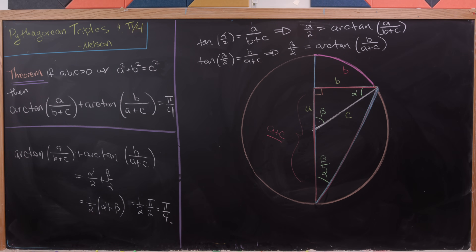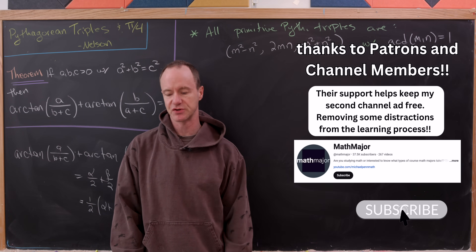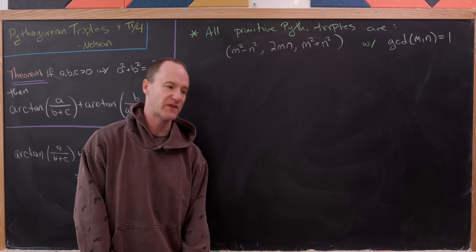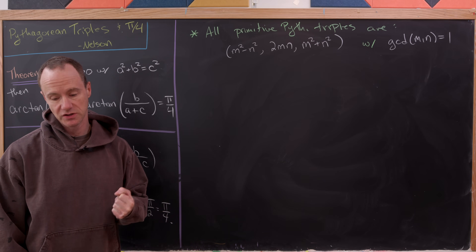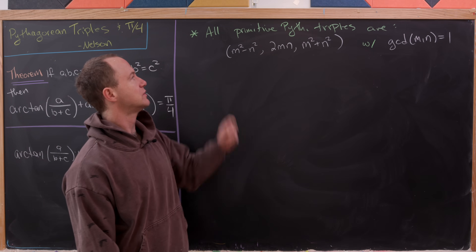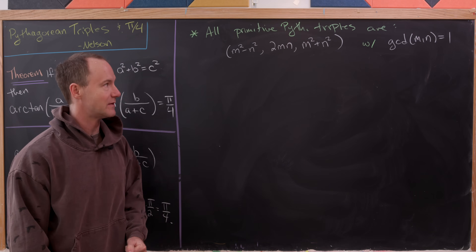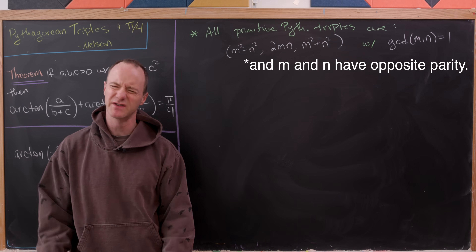Now let's look at an application of this theorem to build infinitely many formulas for pi involving the inverse tangent of rational numbers. We'll use the fact that all primitive Pythagorean triples are of the form (m²−n², 2mn, m²+n²), where the GCD of m and n is 1. This is a standard result.